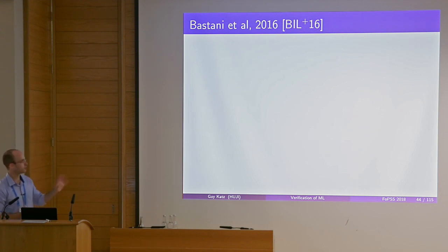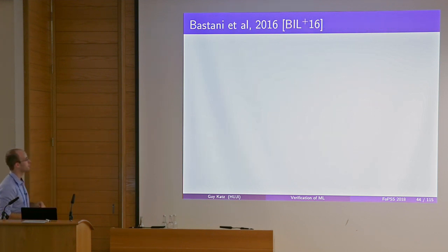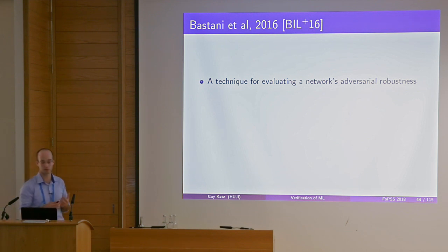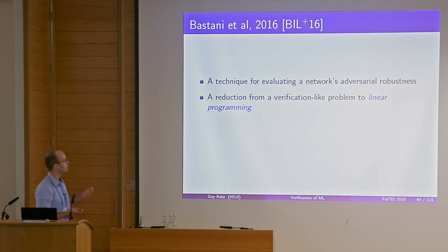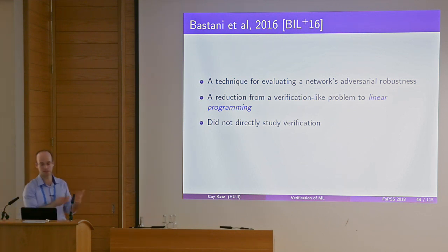After 2010, there were a few quiet years until 2016, when Bastani and co-authors published a paper at NIPS proposing a technique for evaluating a neural network's adversarial robustness. This was not strictly a verification paper — the word 'verification' may not even appear in it — but it had interesting applications for verification. They solved a verification-like problem by reducing it to linear programming.